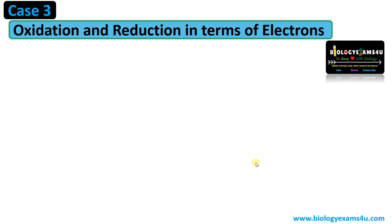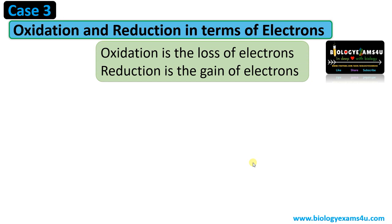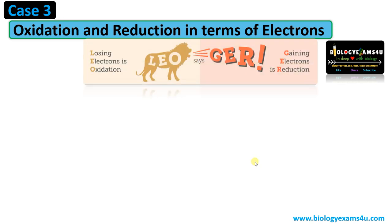Now the final case, case 3: oxidation and reduction in terms of electrons. Oxidation is the loss of electrons whereas reduction is the gain of electrons. Here is an interesting mnemonic — LEO says GER. LEO: losing electrons is oxidation, whereas GER: gaining electrons is reduction.